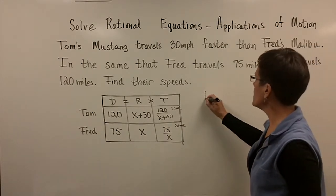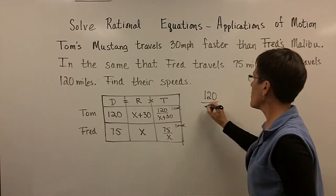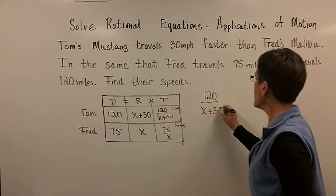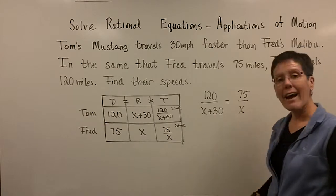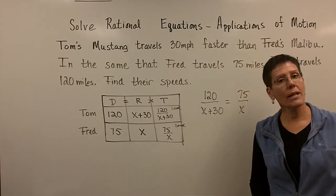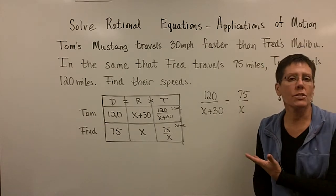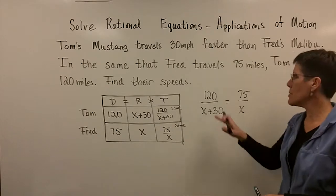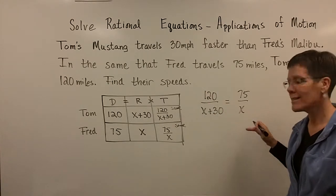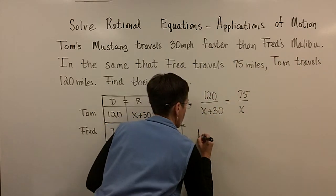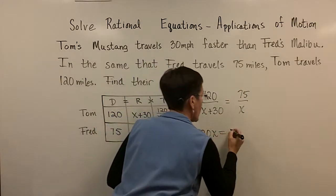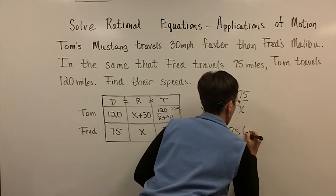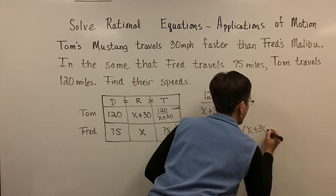And so now I'm going to set the 120 over x plus 30. I'm going to set that equal to the 75 over x. And I have a rational equation to solve. And it's a proportion, so I'm just going to set the cross products equal.